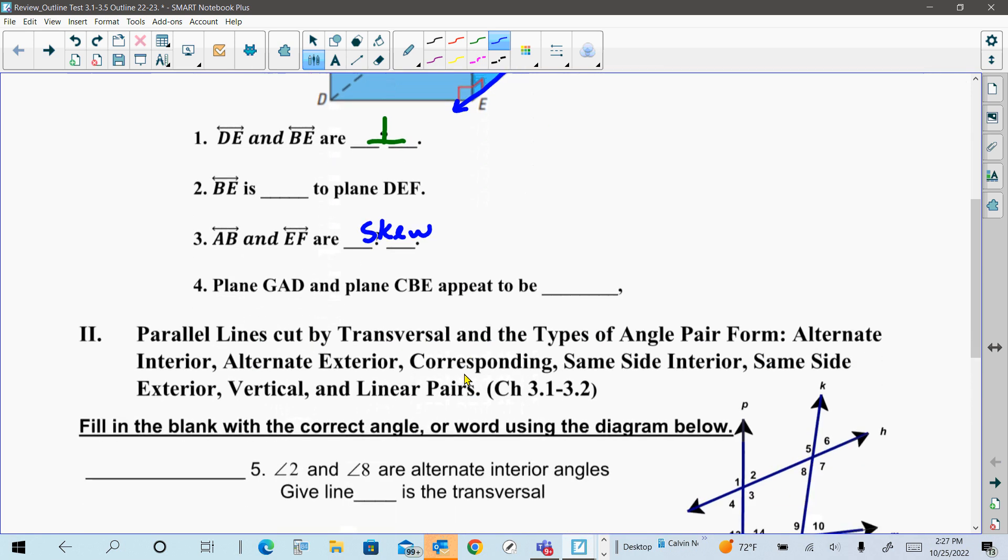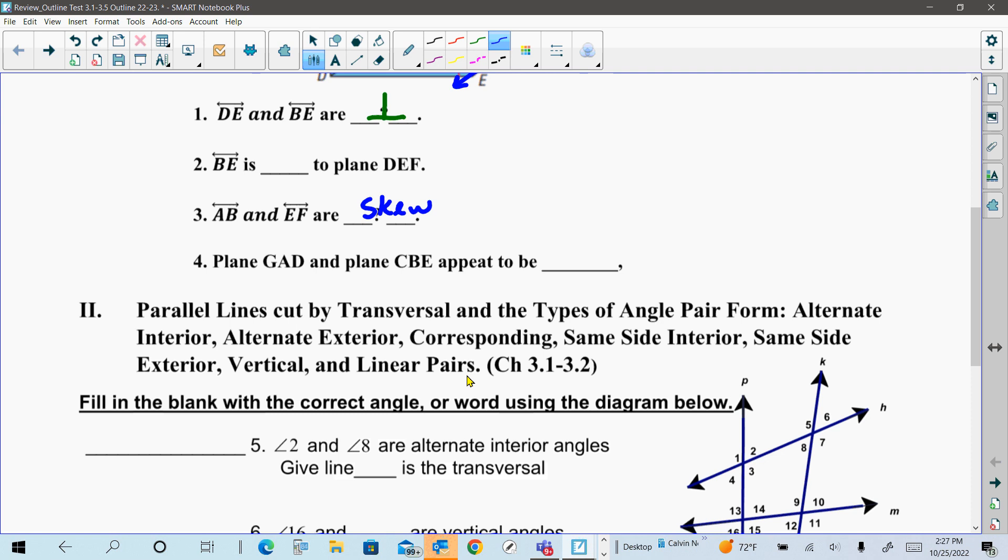Now, this section, we need to know parallel lines cut by transversal, and you need to know all the different types of angles formed. So you need to know what makes up alternate interior, alternate exterior, corresponding, same-side interior (this is the same thing as consecutive interior), and then same-side exterior (that's consecutive exterior). You still need to know vertical and linear pair.